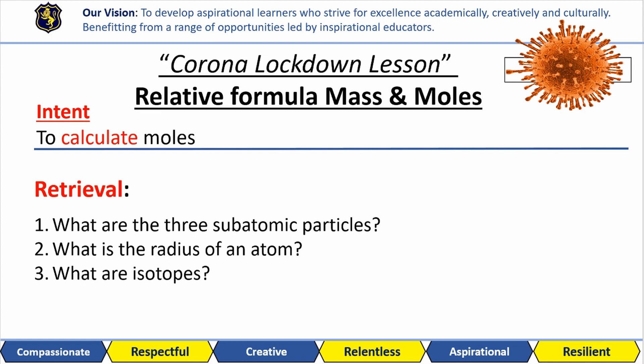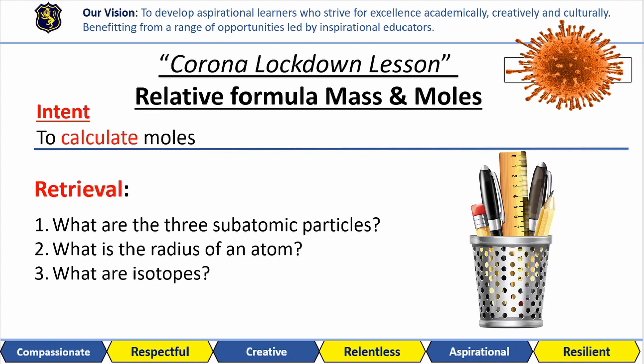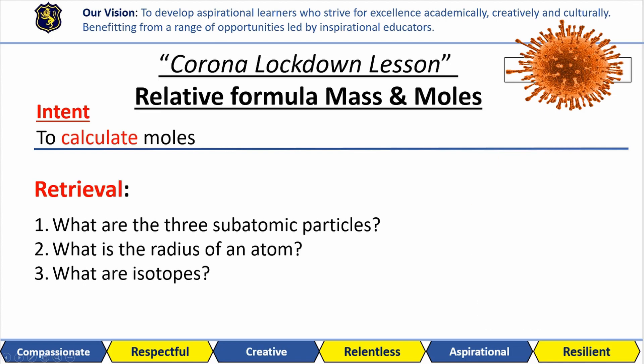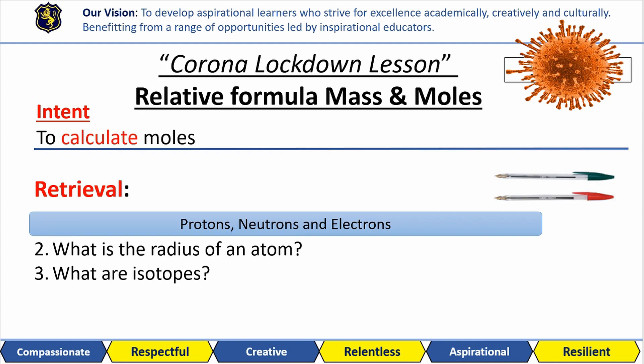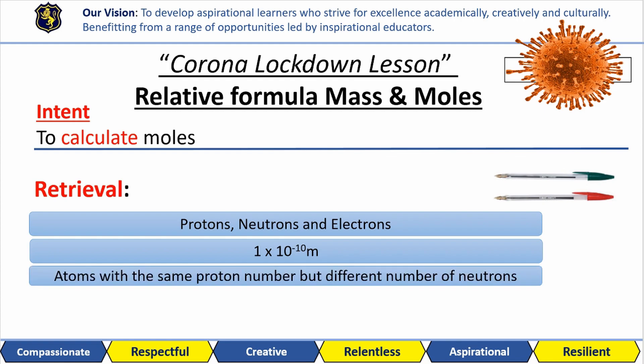Cool, get them red pens ready to mark and correct. Atoms are made up of protons, neutrons and electrons. Atoms have a radius of 1 times 10 to the minus 10 meters and isotopes are atoms with the same number of protons but different numbers of neutrons.